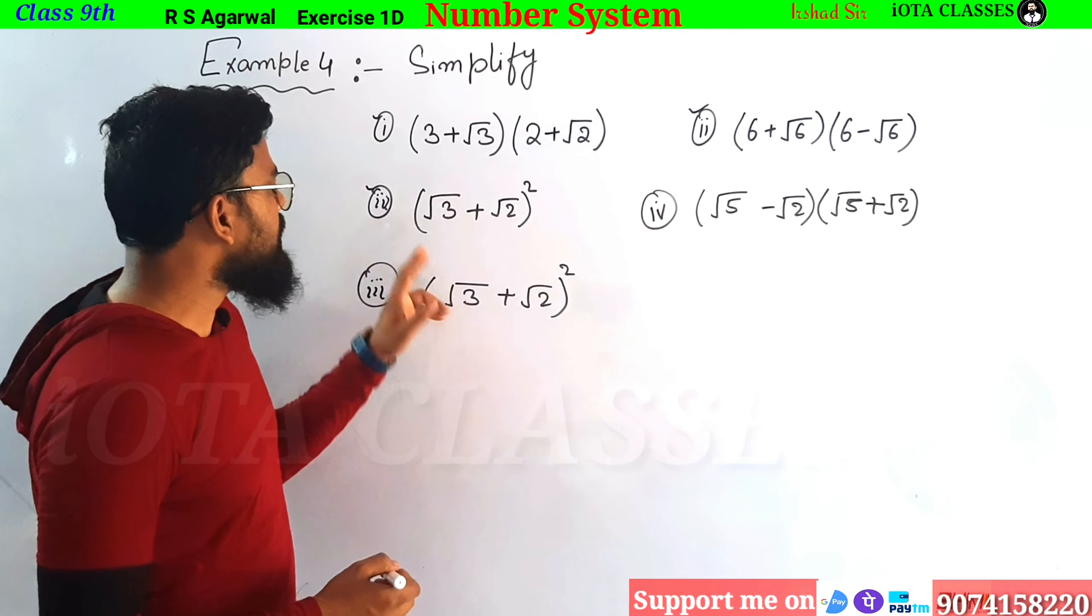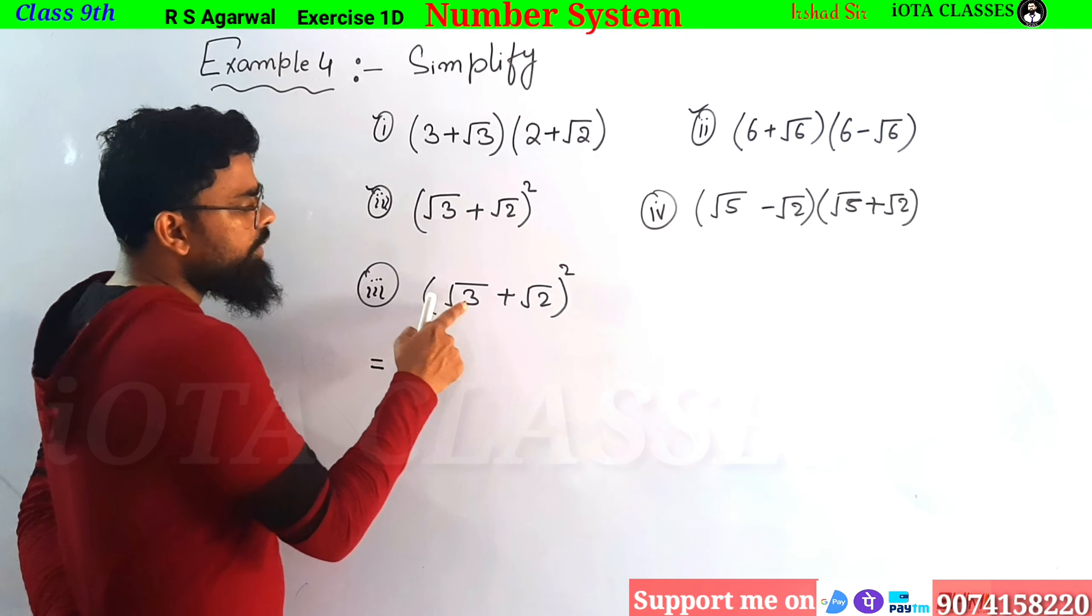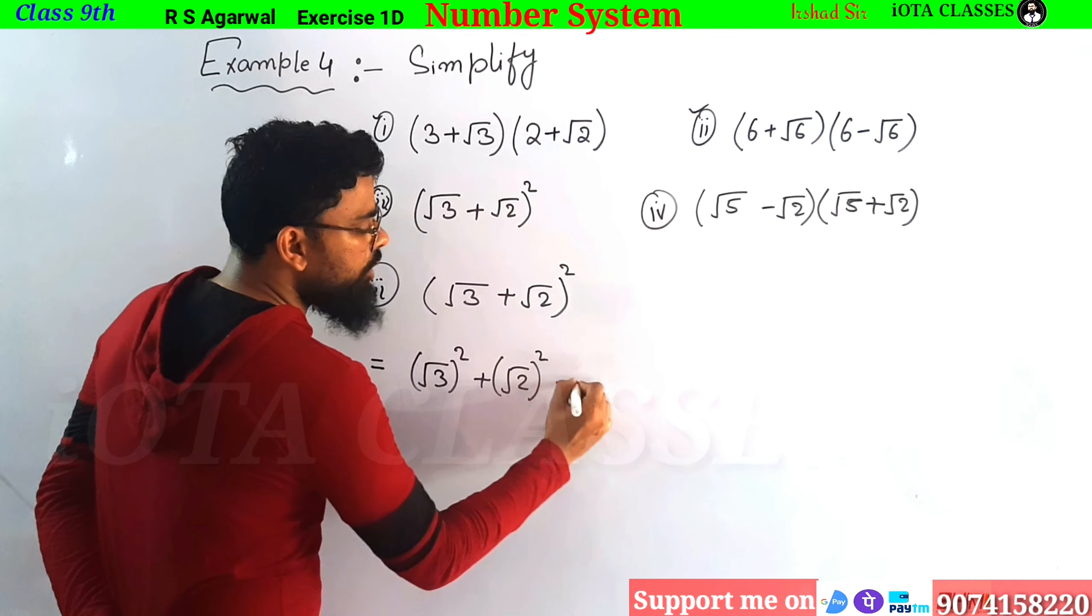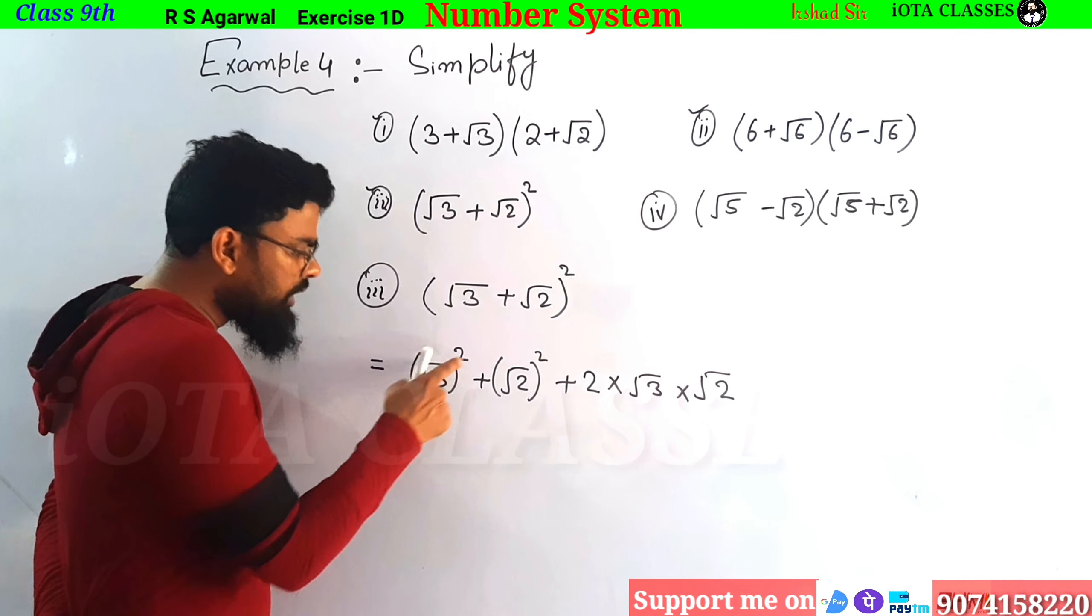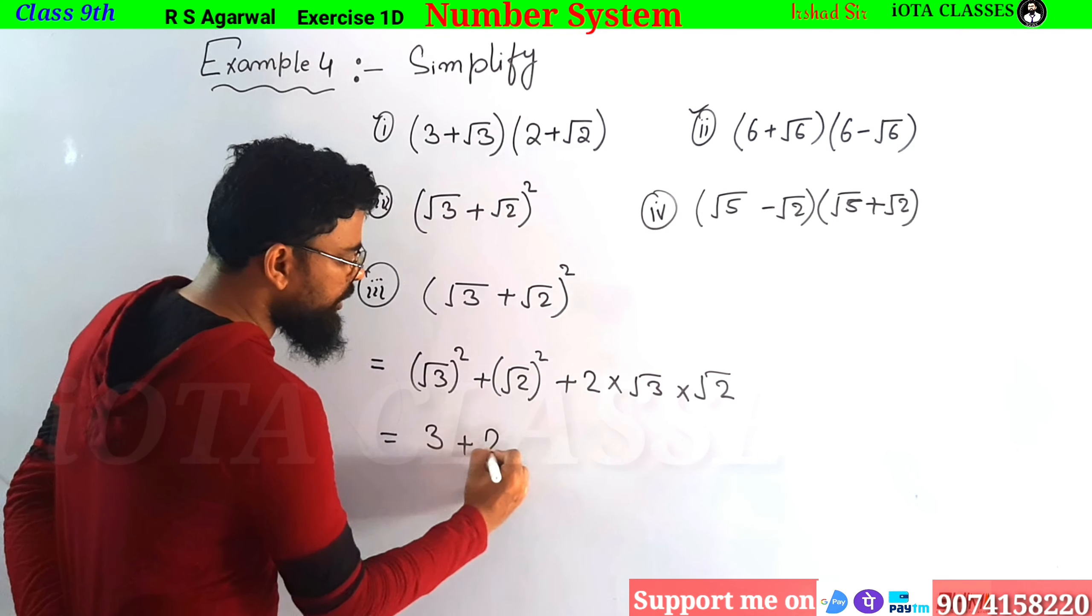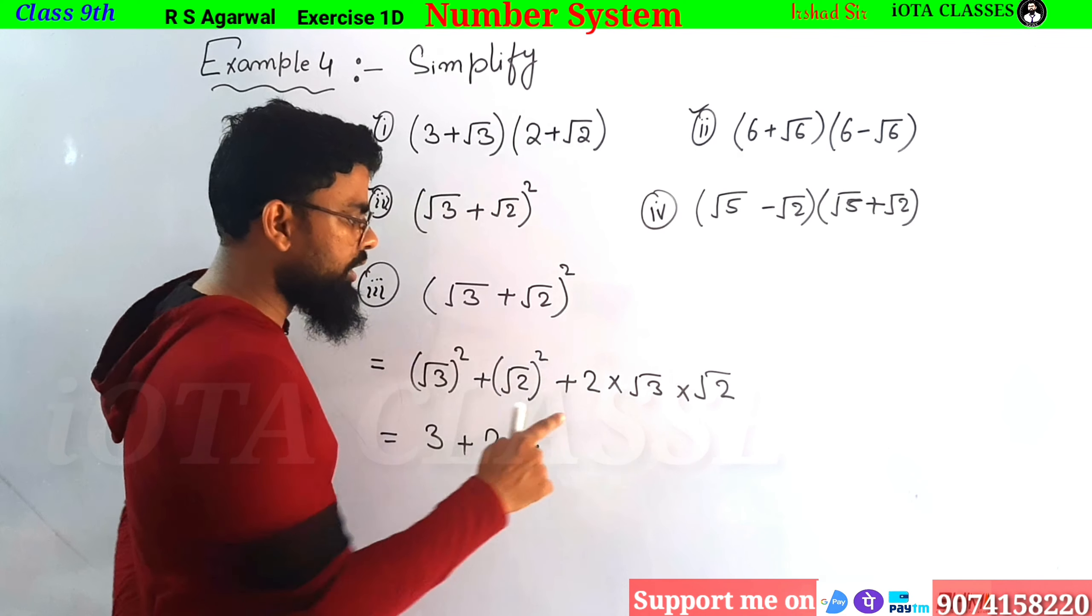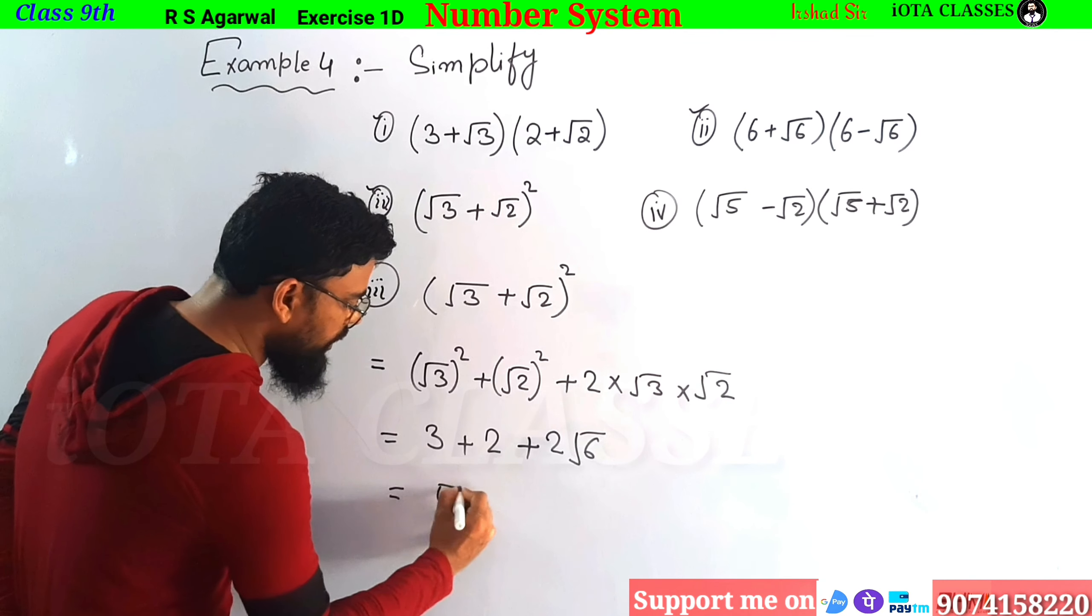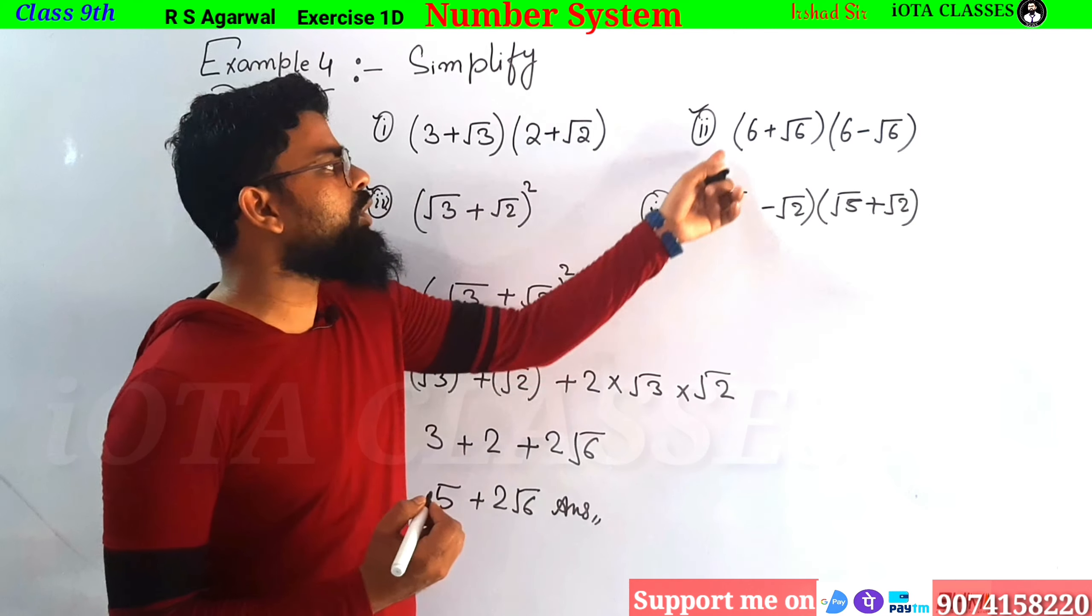Now question number three, which is different. The question number three, we're going to do what is root 3 plus root 2 whole square. So simply formula to order A plus B whole square. If I turn it off, then A plus B whole square, this is the formula which is A square, root 3, plus B square, root 2 square. A square plus B square plus 2 into A, so 2 into A root 3 into B root 2. Then plus root 2 into root 2. How to solve? So 3 plus 2 is our value, this whole 5, plus 2 root 6. This is our answer.